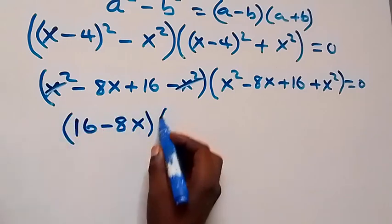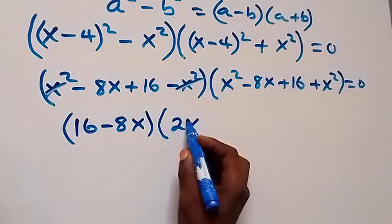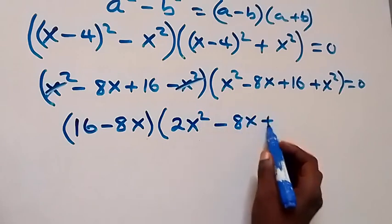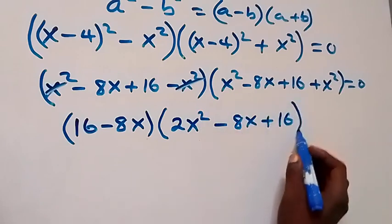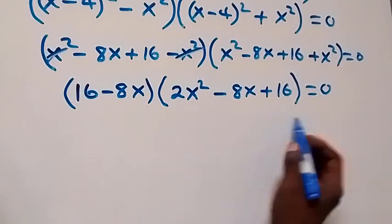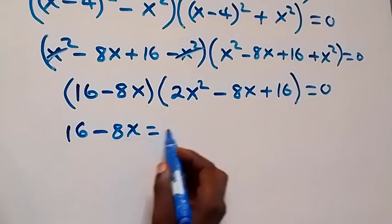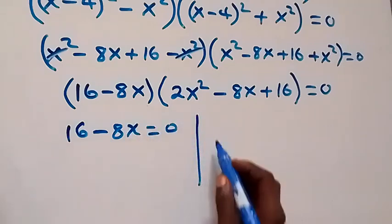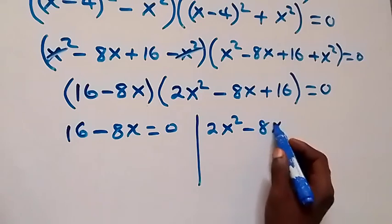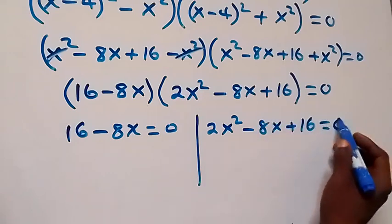For the second bracket: x squared plus x squared gives us 2x squared, then minus 8x plus 16. So we have (16 minus 8x) times (2x squared minus 8x plus 16) equals zero, giving us from the first factor: 16 minus 8x equals zero.